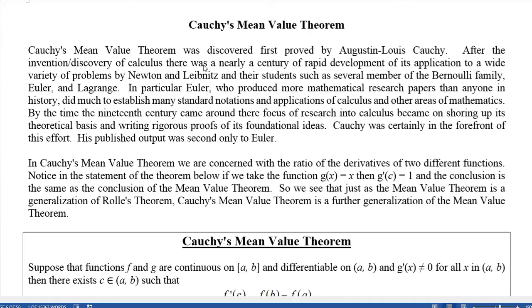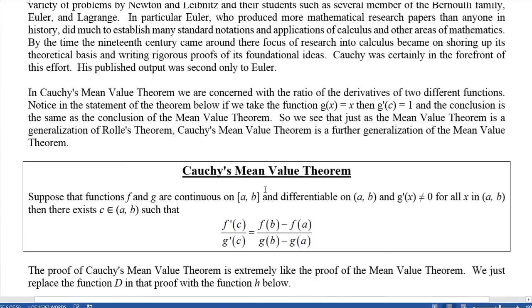Now specifically, Cauchy's Mean Value Theorem—what we're concerned with is a ratio of the derivatives of two different functions like this: f'(c) over g'(c), and we're going to get that that's equal to a ratio of basically delta y's here: f(b) - f(a) over g(b) - g(a).